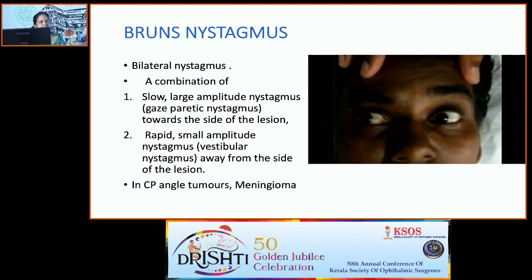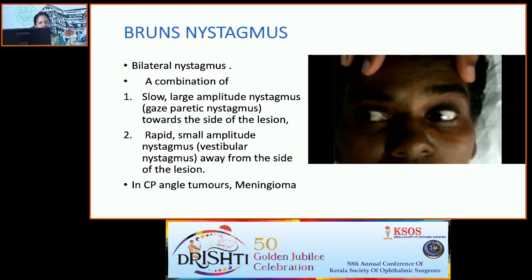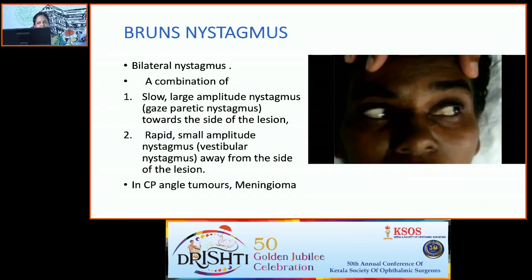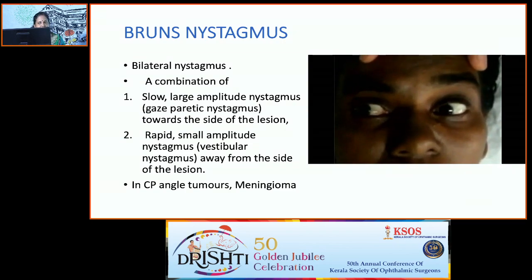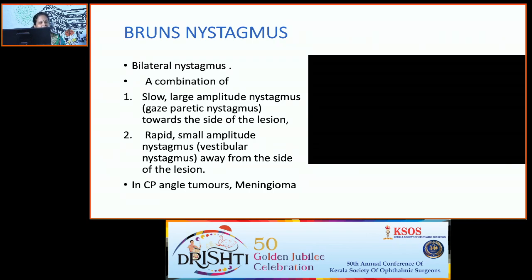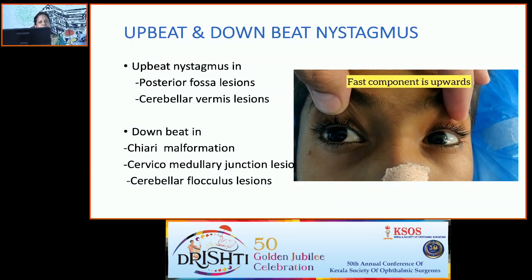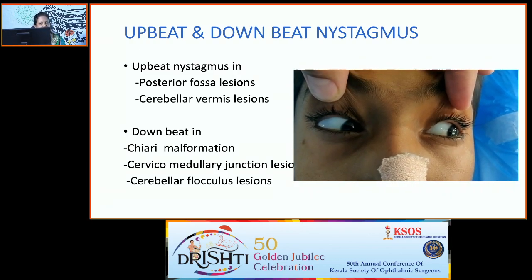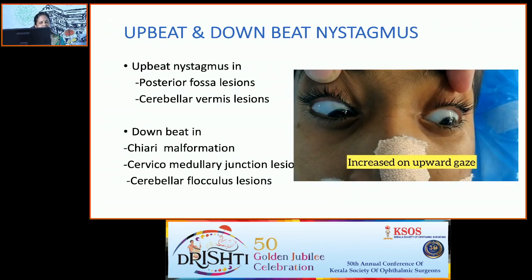Central nystagmus is classically purely horizontal, purely vertical, or purely torsional. The nystagmus is more toward the side of lesion, does not change with fixation, and there is no fatigability. Gaze-evoked nystagmus is a jerky nystagmus in lateral or up-gaze that obeys Alexander's law — nystagmus increases in amplitude and frequency as the patient looks in the direction of the fast phase. Bruns nystagmus is a bilateral combination of slow, large-amplitude nystagmus toward the side of lesion and rapid, small-amplitude nystagmus away from it, classic for CP angle tumor and meningioma.